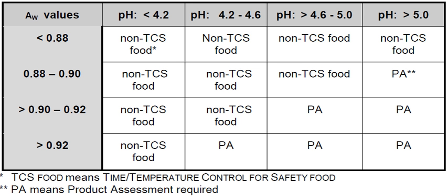Time, Temperature Control for Safety Food includes: an animal food that is raw or heat treated; a plant food that is heat treated or consists of raw seed sprouts, cut melons, cut leafy greens, cut tomatoes or mixtures of cut tomatoes that are not modified in a way so that they are unable to support pathogenic microorganism growth or toxin formation; or garlic in oil mixtures that are not modified in a way so that they are unable to support pathogenic microorganism growth or toxin formation.